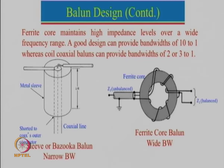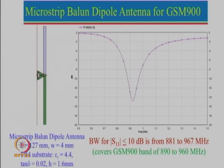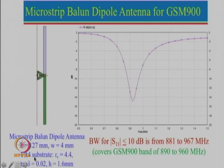In a monopole antenna we require only a single feed and the ground plane acts as the ground. However, we will talk about one very simple way to design a microstrip balun. Here we have a dipole antenna printed on an FR4 substrate, which is a lossy but very low cost substrate.